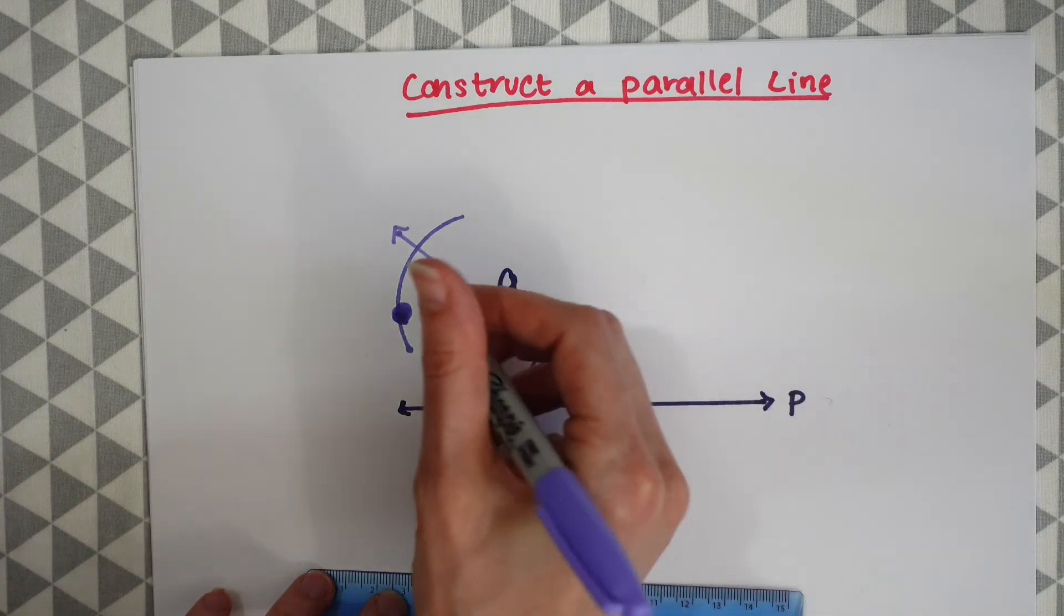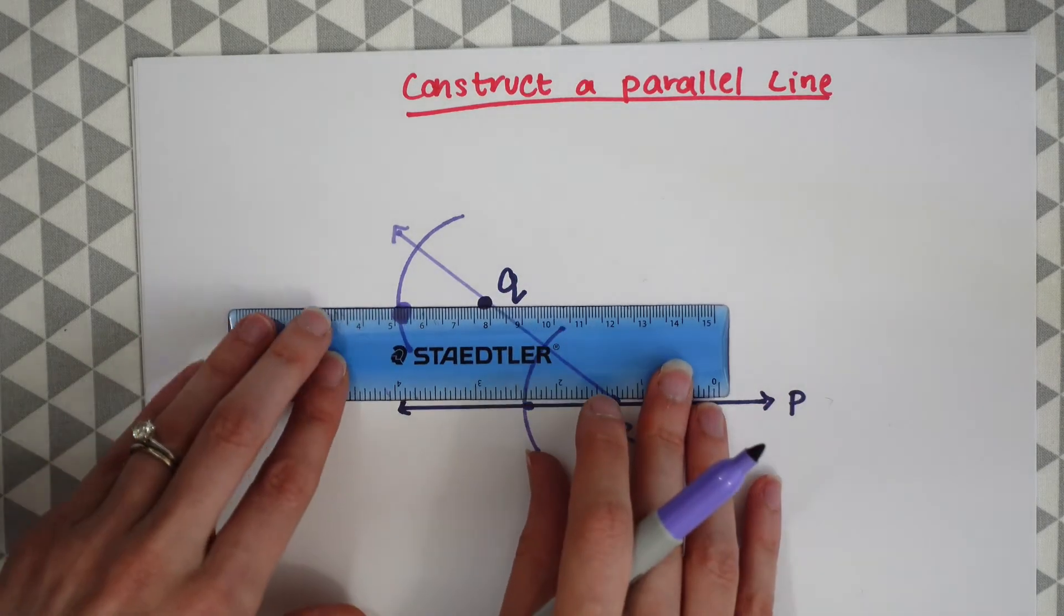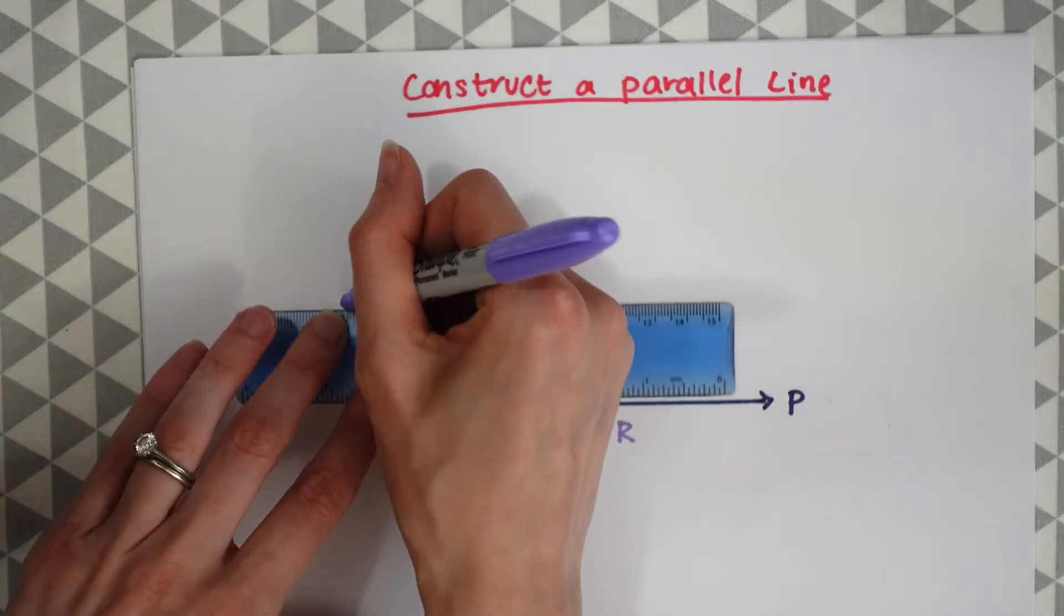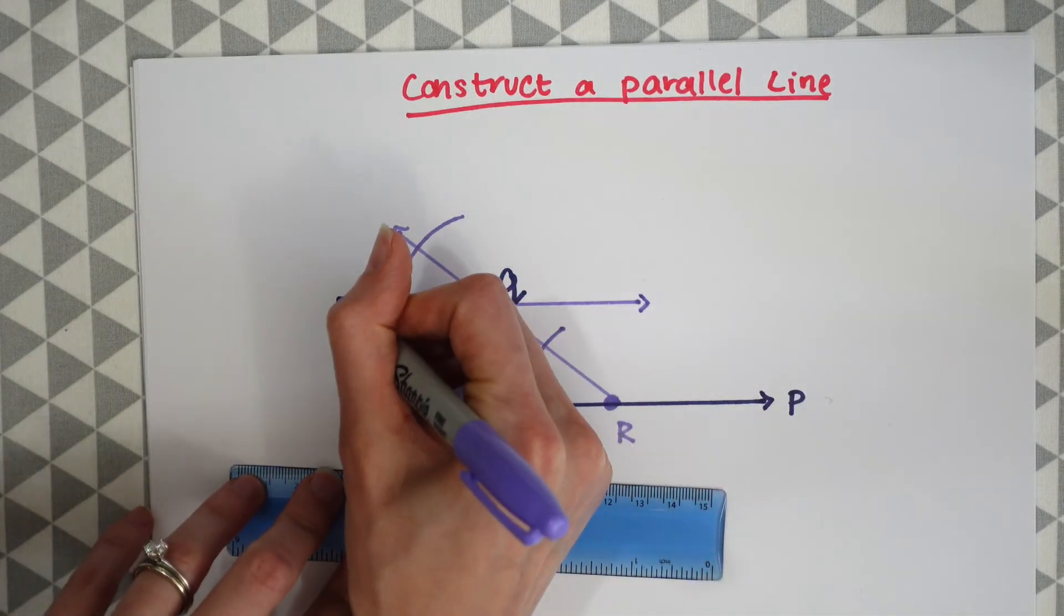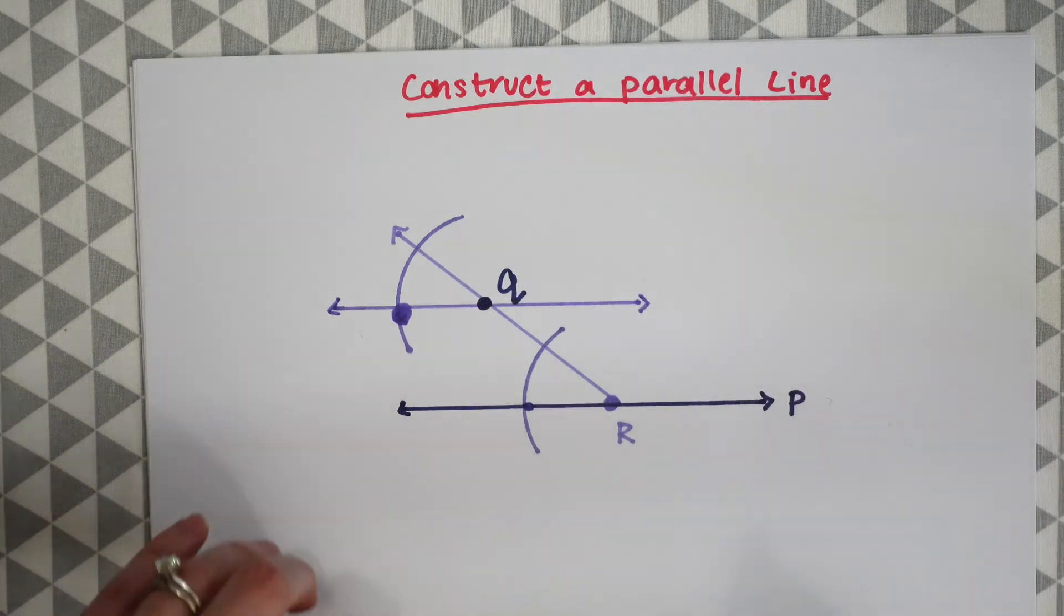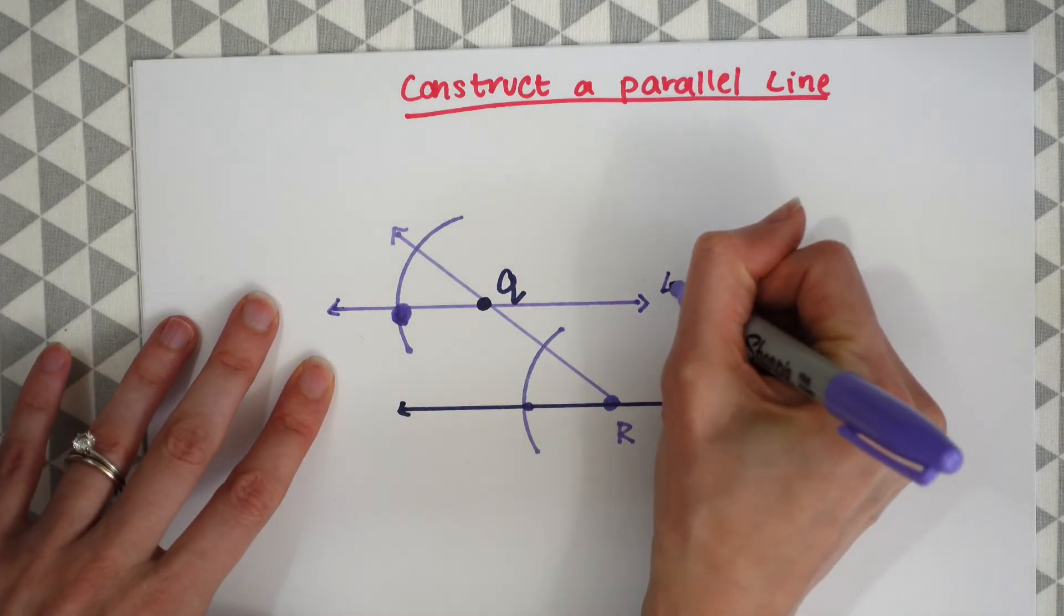Because these angles are equal, we know that this is going to be parallel. We can make a line that is parallel and this is our new parallel line.